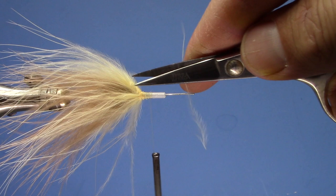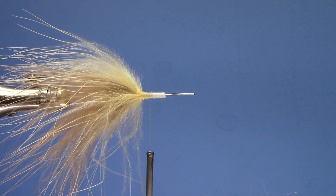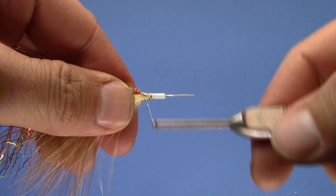So now I've got everything folded back nicely. Now I'm going to take an EP Thunderstruck brush. This is the 3-inch. You could choose your colors. I can't remember what this one's called off the top of my head, but it's got copper and gold in it. It's a nice contrast to these Marabous.